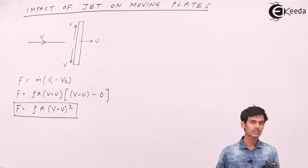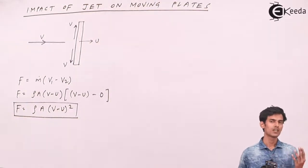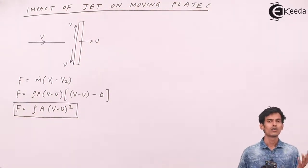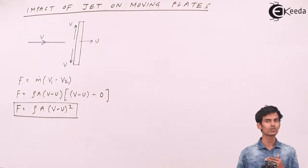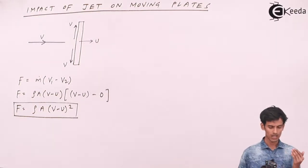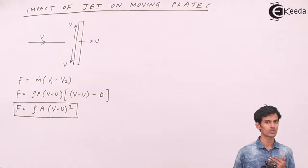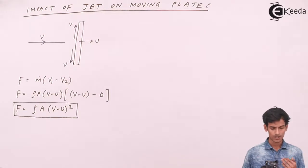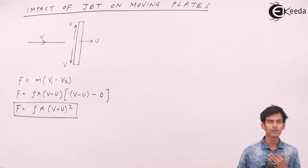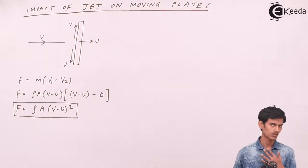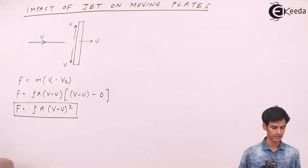So the force exerted by a jet on a moving vertical plate having velocity U is ρA(V − U)². The next case is for inclined plates.